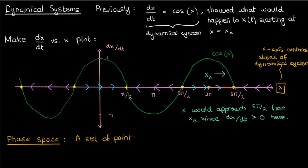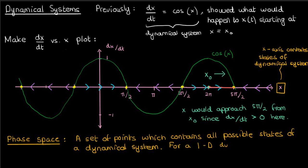A phase space is the set of points which contains all the possible states of the dynamical system. For this particular example, the phase space is given by the x-axis, and in general for a one-dimensional dynamical system given by dx/dt equals f(x), the phase space is the x-axis. The x-axis here contains all the solutions mainly because it's impossible for a one-dimensional system like this to move outside the x-axis.